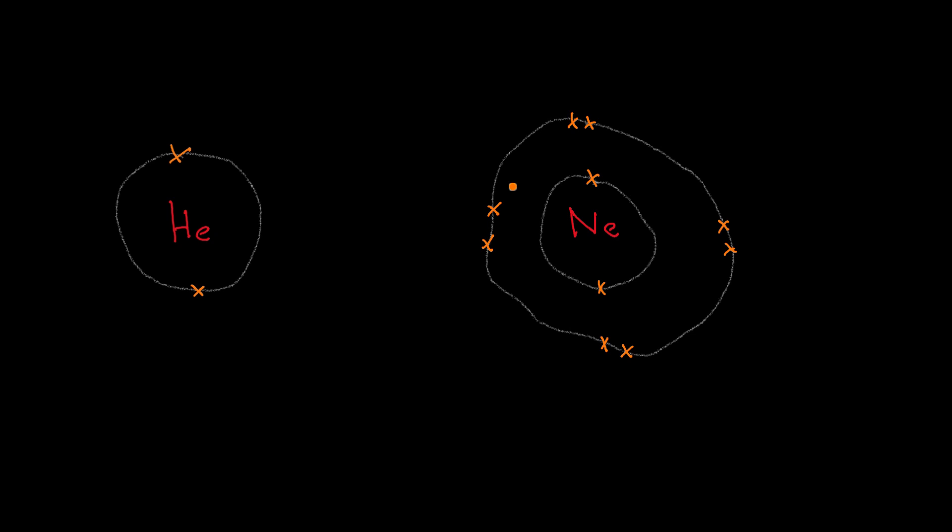So what you actually find is that these elements exist as atoms. They're the only elements which exist stably as atoms. They don't bond with anything else, they don't turn into molecules, they don't have any kind of ionic bonding with other substances or metallic bonding because they're not metals. They're fully stable and happy to exist as atoms.